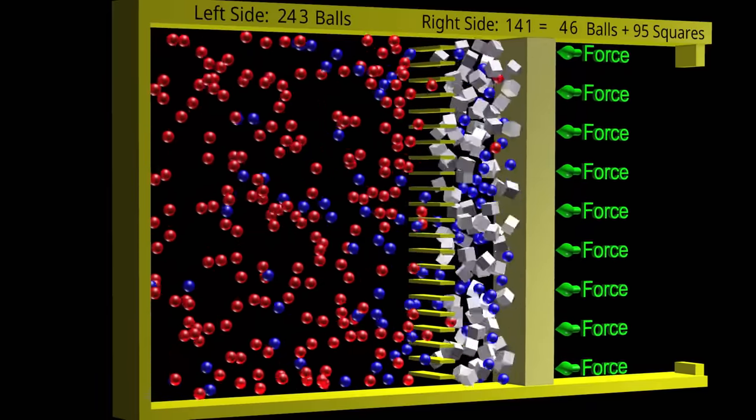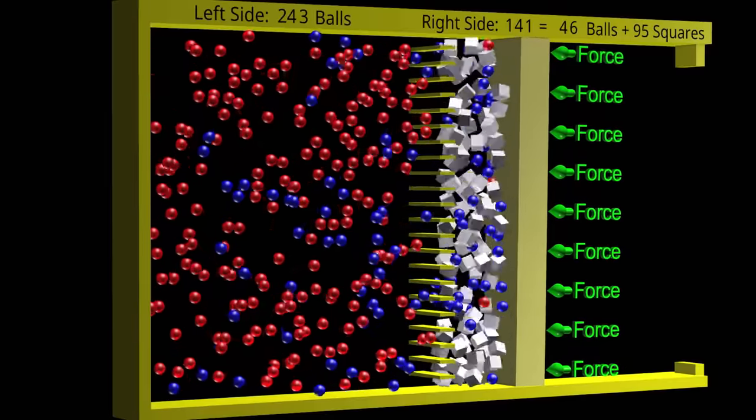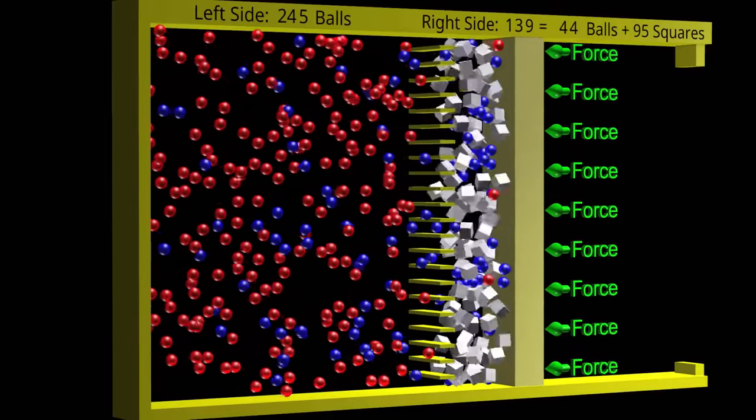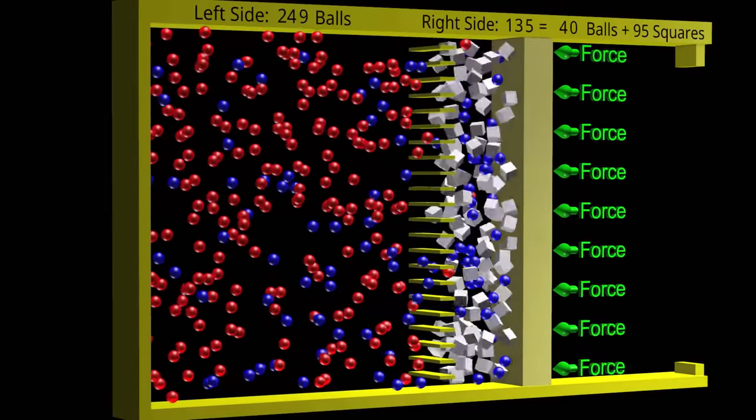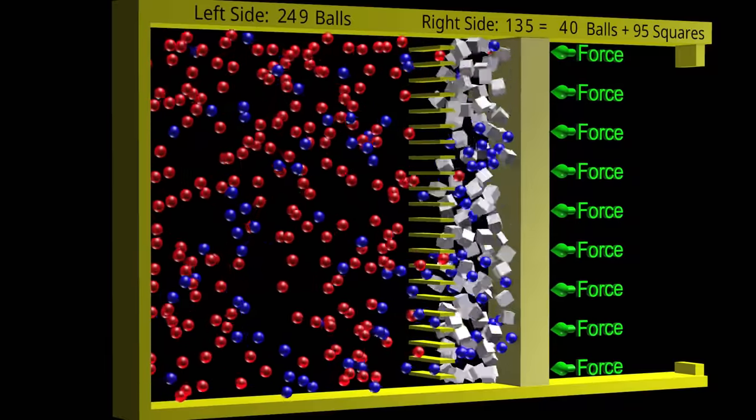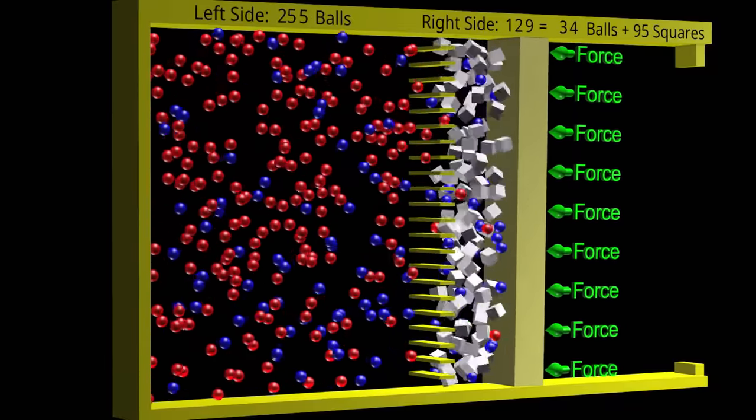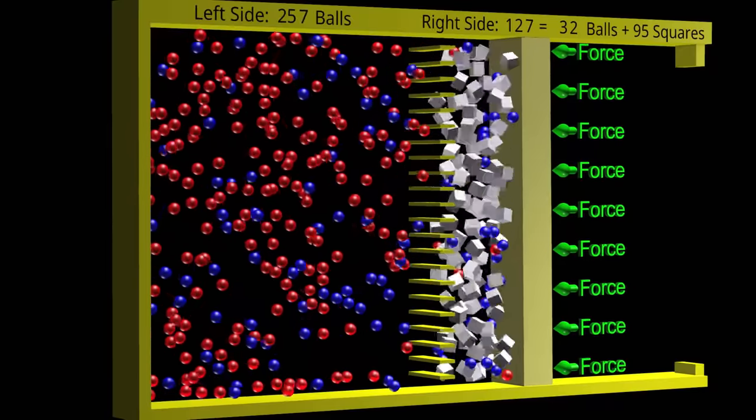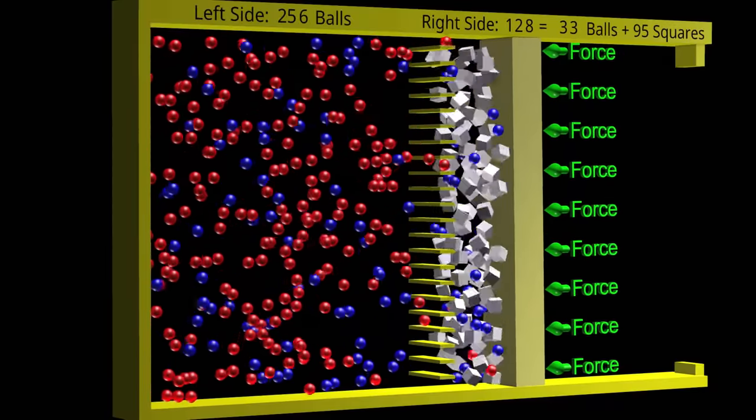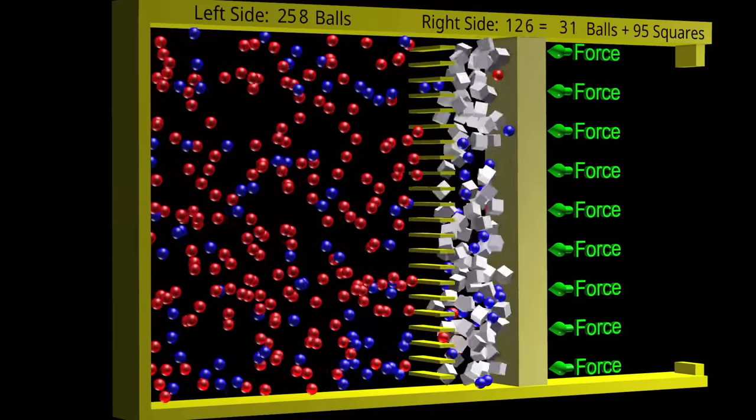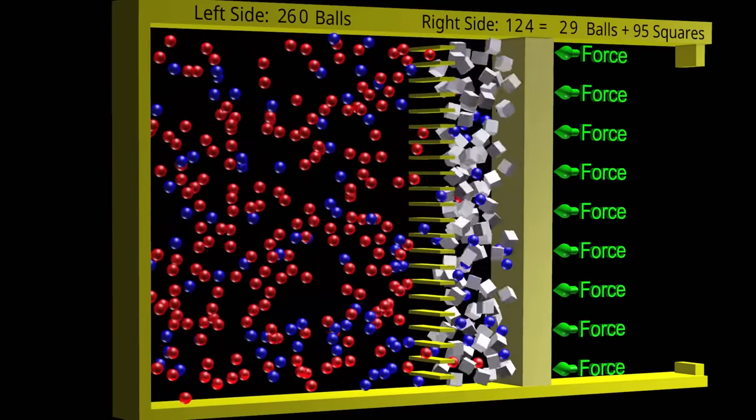The white particles can represent salt ions. The red and blue balls can represent a fluid. In reverse osmosis, we push a fluid with dissolved salt ions through a membrane, which allows the fluid to pass through but blocks the salt ions.